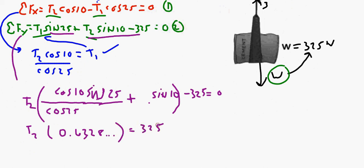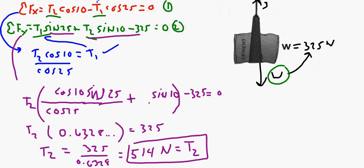I'm going to add the 325 to the other side, and so now all I have to do to solve for T2 is to divide that number over. So 325 divided by 0.6328, and that gives us a force of approximately 514 Newtons. So we have found out what the tension in T2 is.